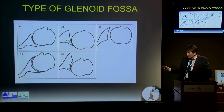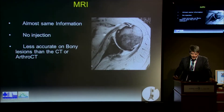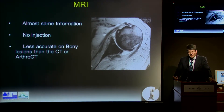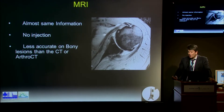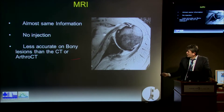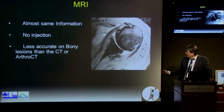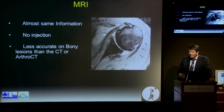C is a patient without any glenoid. Now, with MRI combined with plain X-rays, MRI gives you the same information as CT without requiring any injection for arthrography. It is less accurate on bony lesions, but you can still see the shape of the glenoid and get information about soft tissues. So now my preoperative planning is plain X-rays and MRI.